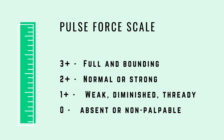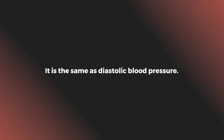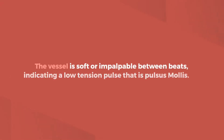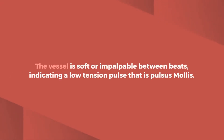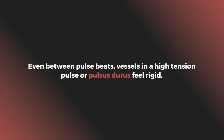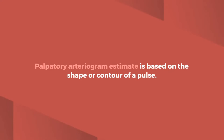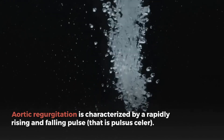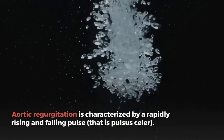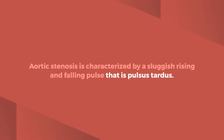Tension, also known as compressibility of the pulse, is the same as diastolic blood pressure. The vessel is soft or impalpable between beats, indicating a low-tension pulse — pulsus mollis. Even between pulse beats, vessels in a high-tension pulse — pulsus durus — feel rigid. Regarding pulse form, the palpatory arteriogram estimate is based on the shape or contour of a pulse. Aortic regurgitation is characterized by a rapidly rising and falling pulse — pulsus celer. Aortic stenosis is characterized by a sluggishly rising and falling pulse — pulsus tardus.